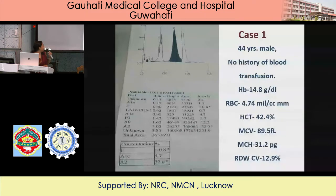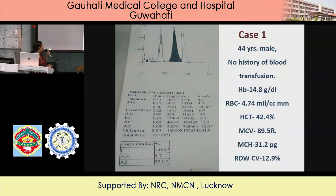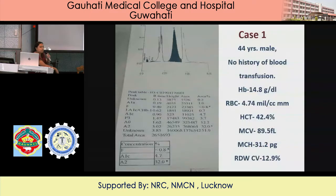Case one: 44-year male, no history of blood transfusion. Hemoglobin is 14.8 g/dL, RBC is 4.74, hematocrit 42.4%, MCV 89.5, MCH 31.2, RDW 12.9%. F is less than 0.8, A2 is 32.0, with an unknown peak where the retention time is 3.85 and the area percent is 51.9. The total area is within limits.